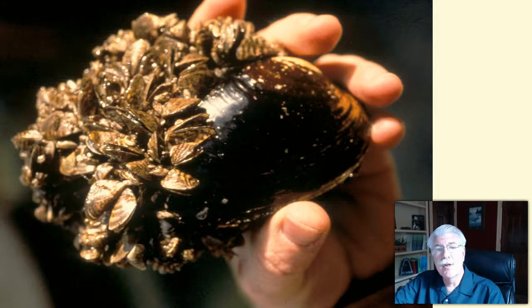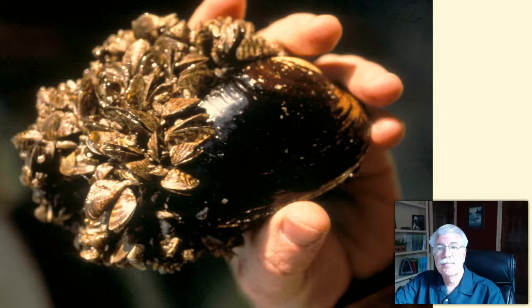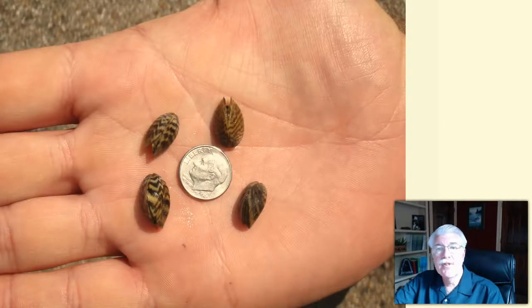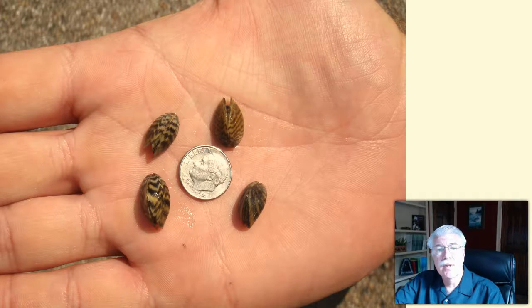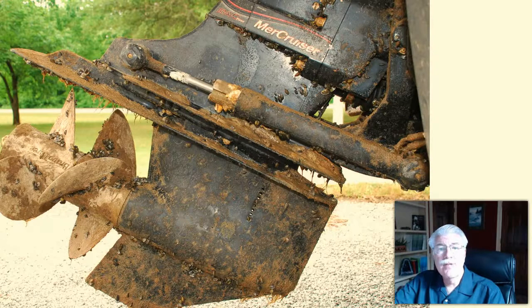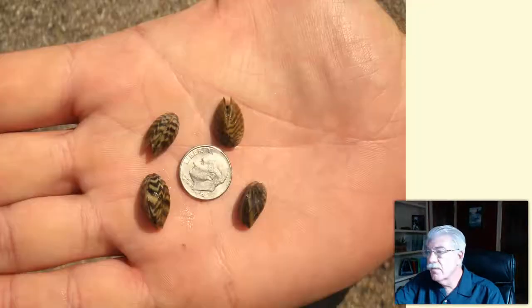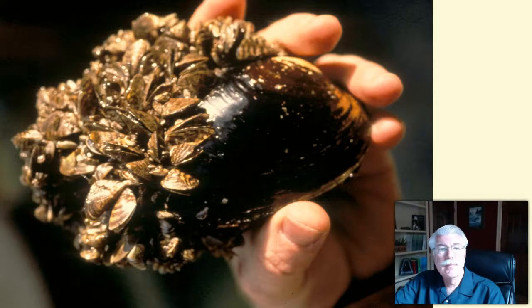The tiny zebra mussel, shown here, has grown in massive numbers — in this particular instance it can be seen covering a native species. They are very small and are now infesting Lake Texoma in north Texas and other locations. Many zebra mussels are shown clinging to the surface of an outboard motor, and here they are shown clinging to the shell of a common Texas river mussel.